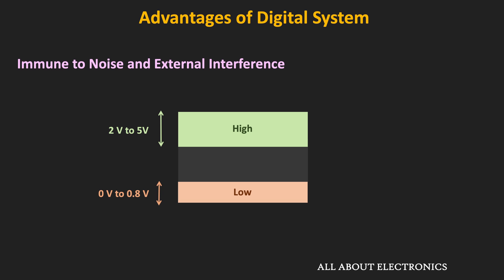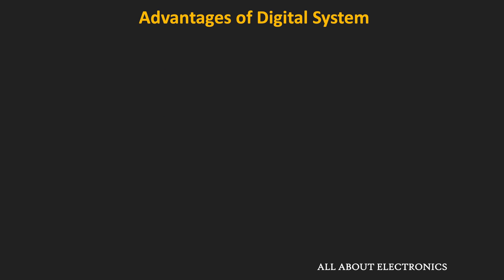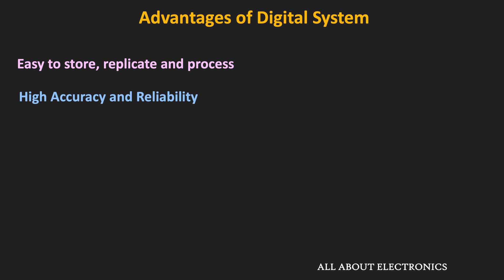This is a key advantage of the digital system: even if noise or interference gets superimposed on the actual signal, as long as the signal level remains within a certain band, it is still possible to identify it as either logic zero or logic one. Other advantages include that digital data is easy to store, replicate, and process — which is not true with analog systems. Digital systems are also more accurate, reliable, and with advances in fabrication technology, easier to build at higher density and are more scalable than analog systems.